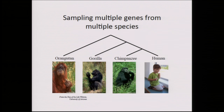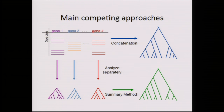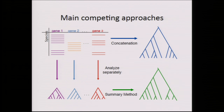We want to look at estimating species trees from multiple genes. The two major competing approaches: one ignores heterogeneity and simply concatenates sequence alignments from different loci and analyzes this large concatenated alignment using maximum likelihood, maximum parsimony, Bayesian methods, or whatever you like — that's called concatenation. The other basic approach is to estimate trees on each of the different loci, and then combine the gene trees together. These are the two dominant approaches because of speed.